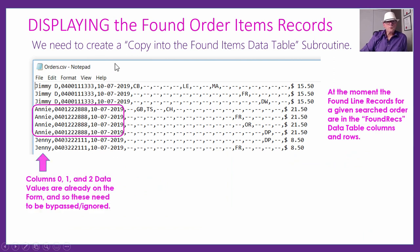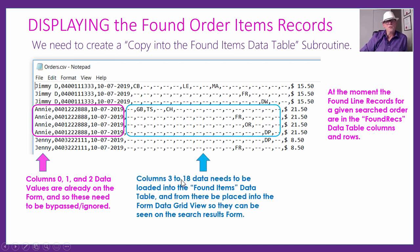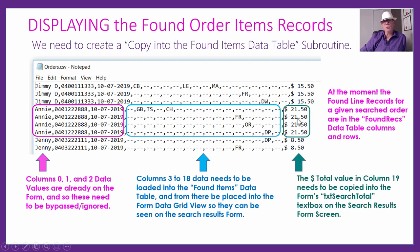Visually: the found records data table has columns zero, one, and two for name, phone, and date — already displayed via cross-form referencing so we can ignore them. Columns 3 to 18 contain the actual order items we want to pull out and put into the found items data table for display in the DataGridView. We also need to pull one copy of the total price from the found records and display it in the dollar total text box on the results form.